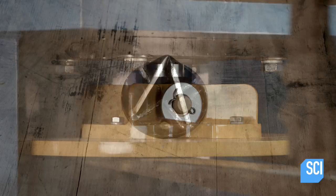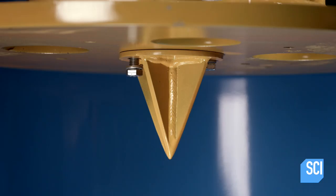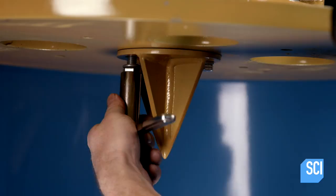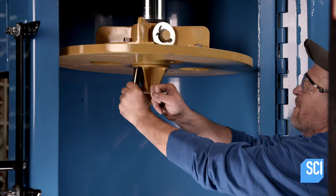The head isn't complete without this pierce point. Fixed to the end of the crusher head, it will puncture the drum to drain residual fluids and release air for better compaction.